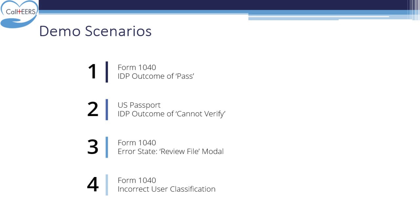The first scenario is three minutes long and will demonstrate uploading a document in the CalHEARS portal that matches the consumer's self-attested information submitted to CalHEARS. The outcome for this scenario will be pass, as IDP will be able to successfully verify the document and determine the consumer's eligibility. The second scenario is about two minutes long and will demonstrate uploading a document that does not match the consumer's self-attested information. The IDP outcome for this scenario will be cannot verify.